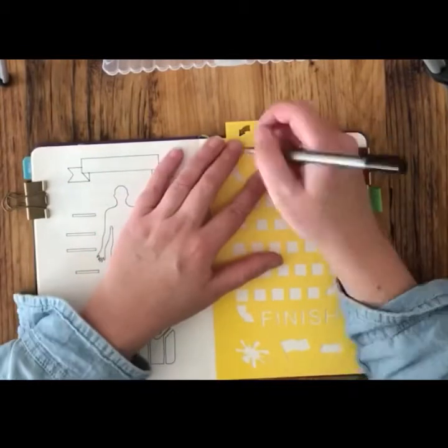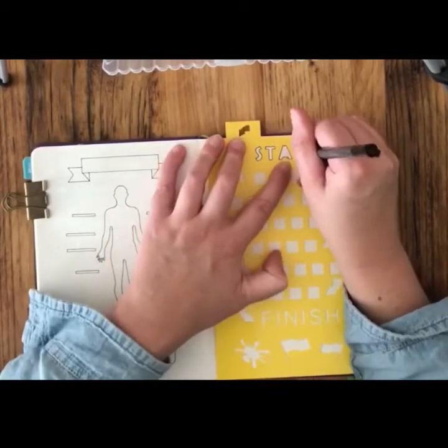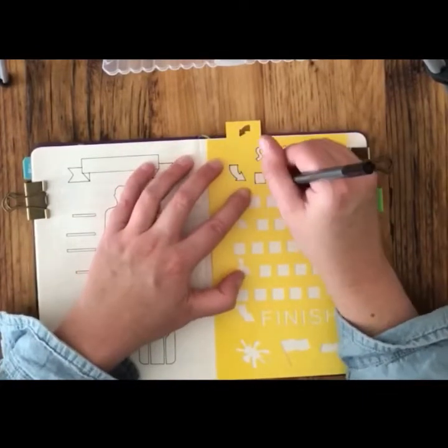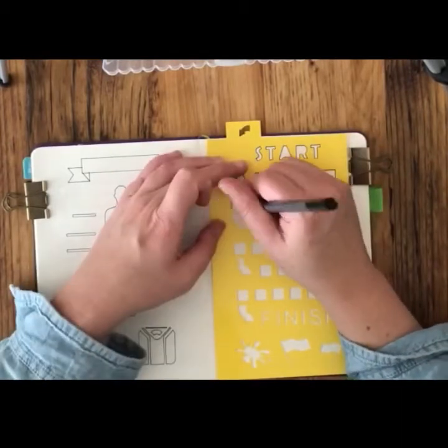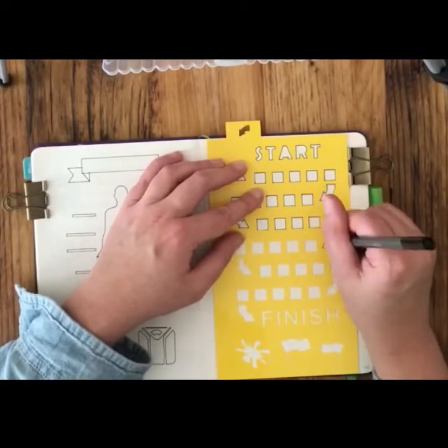Then moving over onto the goal tracker, what this will do is create a countdown so I can fill in the squares as I lose pounds. Just following across all of the boxes, each box across will equate to one pound loss. There's also an arrow, so there's five pounds on each row.